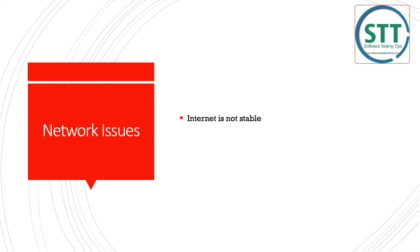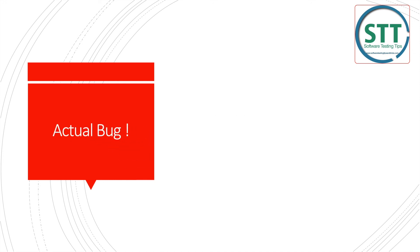Network issues can cause flakiness too. In many companies, the test lab is in a corner of the office where the internet is not stable. Some teams notice that automations pass in the morning but fail in the afternoon or evening due to heavy internet usage. When they monitored it, they found that unstable internet at certain time periods was the cause.